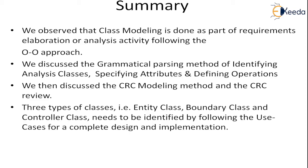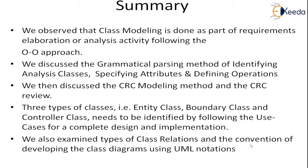We have seen that there are three types of classes needed to completely specify a system: the entity class, which is easy to determine because it is related to the business; the boundary class, which defines the interfacing between external entities and the system; and the controller class, which takes care of the sequence of events. We also examined types of class relations and the convention of developing the class diagram using the UML notation.